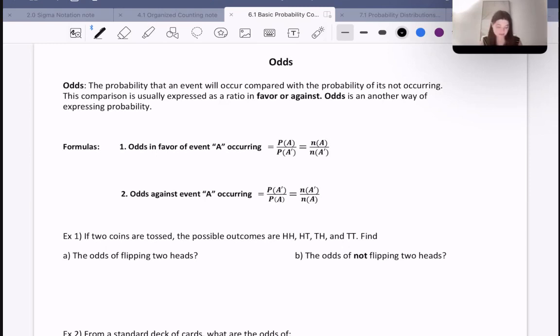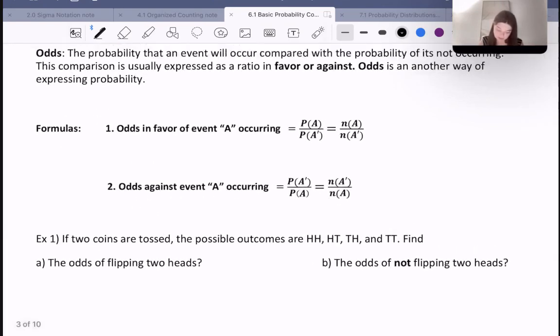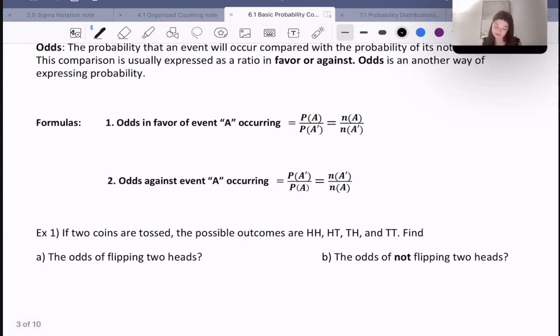So let's talk about formulas. The odds in favor of event A occurring would be P(A) over P(A'), and the odds against A occurring would be probability of A not occurring over the probability of A.